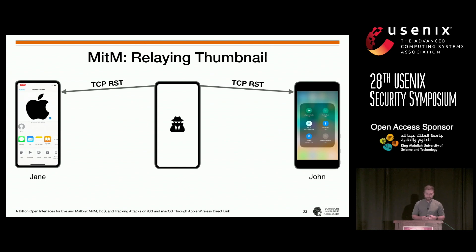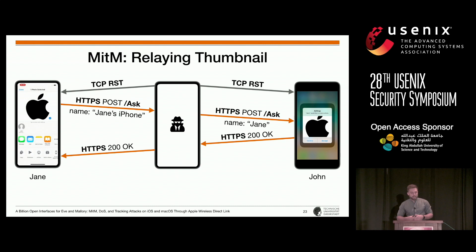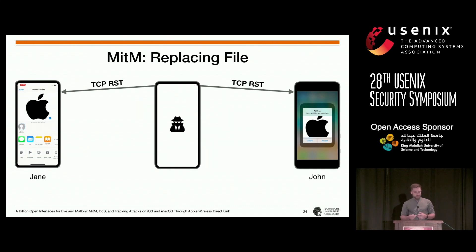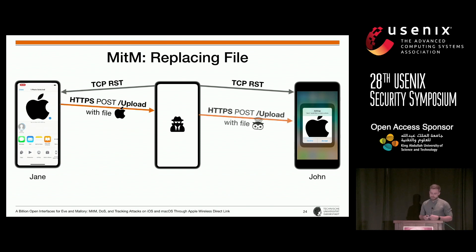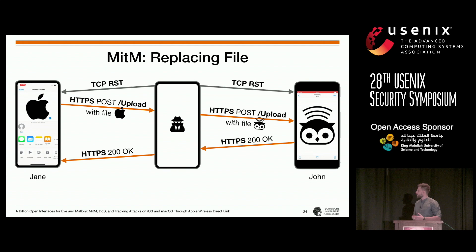The rest of the attack is rather straightforward. The attacker forwards the ask request and responses as-is to keep the original thumbnail in place and make the transmission request seem legitimate. However, in the second step, the attacker replaces the original upload file with its own — enabling the attacker to send a possibly malicious file or link to the receiver.